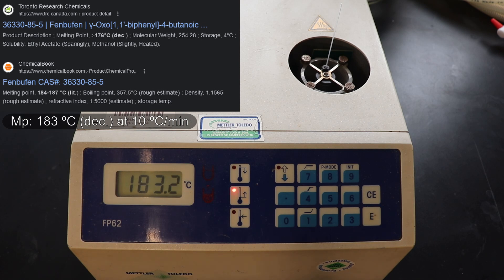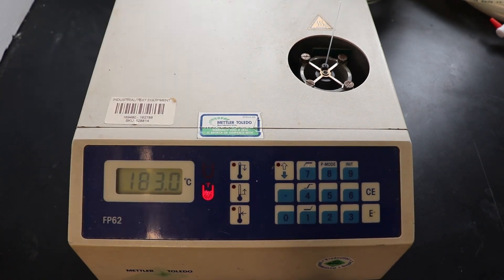However, it also states that decomposition can begin to occur above 176 degrees, so it's hard to get a perfectly fixed number for the melting point due to that. But when I ran the sample, I got a melting point of 183 degrees Celsius at a heating rate of 10 degrees Celsius per minute.